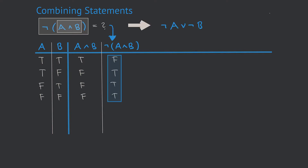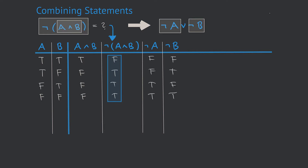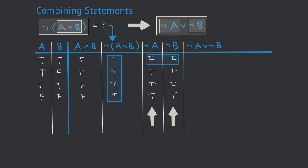Let's look at another expression: not A or not B. In order to evaluate that statement, we start with the components — not A and not B — which are simply the inversion of the values of A and B respectively. The next step is to combine those two components with an OR operator. Remember that the OR operator is only false if both inputs are false. In our case, this is only the case for the first line, where both not A and not B are false, making our complex expression false in the first line and true for all the other three lines.